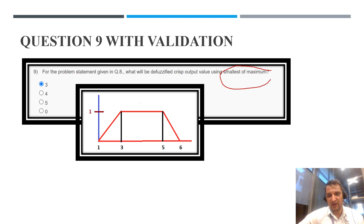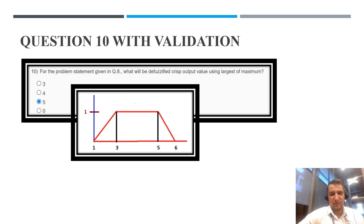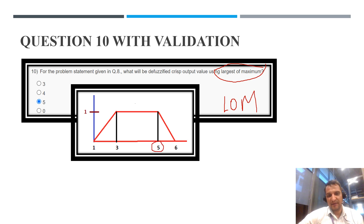Question number 9: same trapezoidal model, using smallest of maxima (SOM). The smallest point at which the maximum membership value is 1 is at value 3, so option A is correct. Question number 10: using largest of maxima (LOM), the largest value at which maximum membership is 1 is 5, so option C is correct.